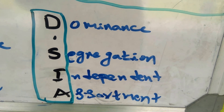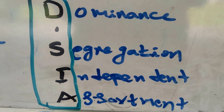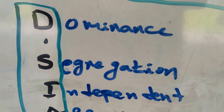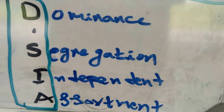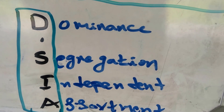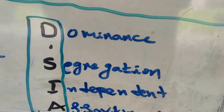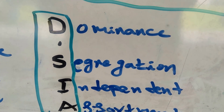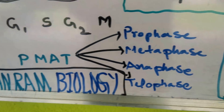To remember Mendel's three laws, the code is DPSI — D for law of Dominance, S for law of Segregation, and IA for law of Independent Assortment. So DPSI helps you remember the three Mendelian laws: dominance, segregation, and independent assortment.